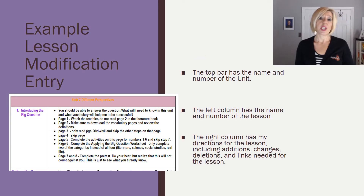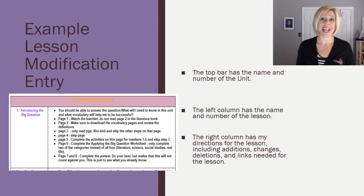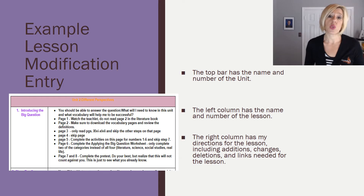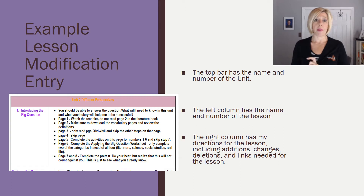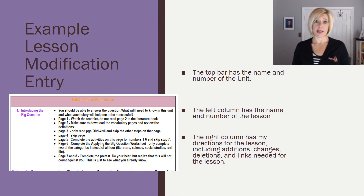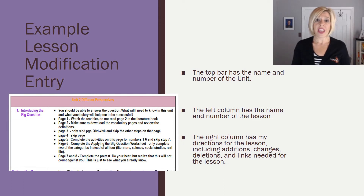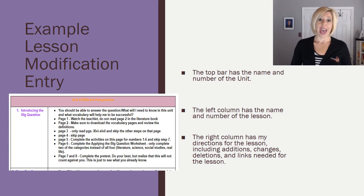When you get to my Google Site and you find the document that has the entire semester's lesson modifications, this is what you're going to see. At the top bar, for each new unit there is a purple row, and that top bar has the name and the number of the entire unit. The left-hand column has the name and the number of the lesson within that unit, and then the right-hand column has the list of all of my directions.